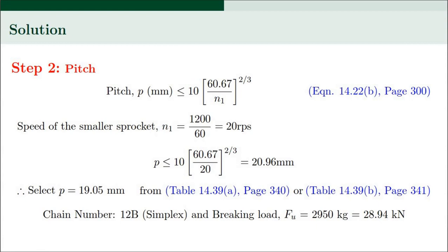In Step 2 we determine the pitch of the chain. The empirical relation (equation 14.22b, page 300) is: P in millimeters ≤ 10 × (60.67 / N1)^(2/3), where N1 is the speed of the small sprocket in RPS. N1 = 1200 / 60 = 20 RPS. Substituting, P is obtained as 10 × (60.67 / 20)^(2/3) = 20.96 mm, so we select a value close to but less than this.